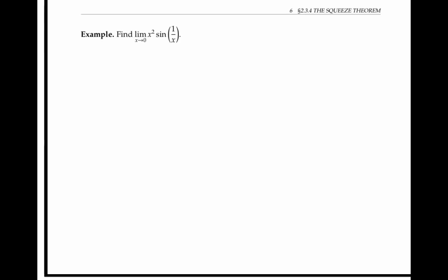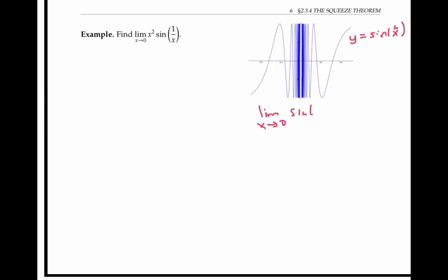Now let's use the squeeze theorem to find the limit as x goes to zero of x squared sine one over x. Now you might remember that sine one over x by itself has this crazy oscillating behavior. In fact, the limit as x goes to zero of sine one over x does not exist, because the function never settles down to a single finite value. At first glance, you might think the limit of x squared sine of one over x also wouldn't exist.